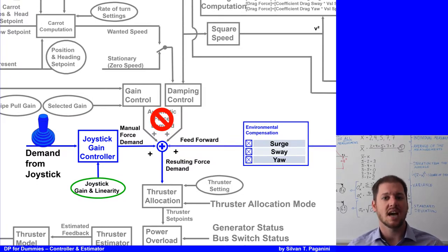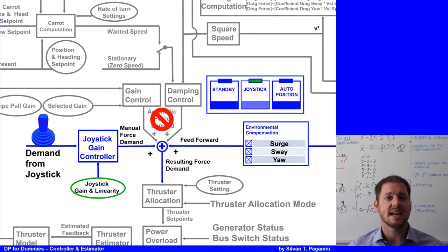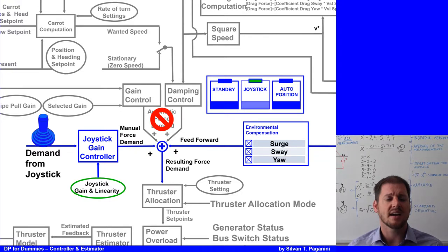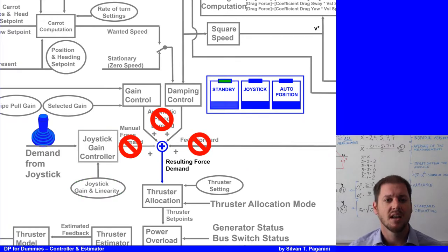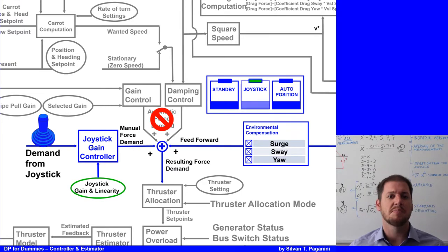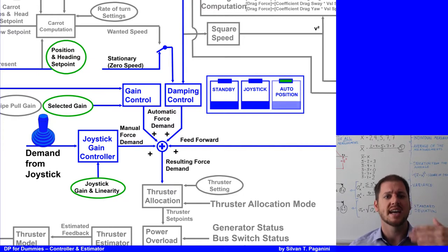If you are using the joystick for a long time with the position reference system selected, an aero force — also called current — builds up. If you then want to switch to DP, there can be a situation where the calculated current is no longer valid for the new operational condition. A typical example is entering automatic control after a period of using the thruster to hold the vessel against the quayside. In that case, it is good practice to delete the wrong current by going back to standby and straight back to joystick, so the DP system starts over calculating the current without the incorrect data.